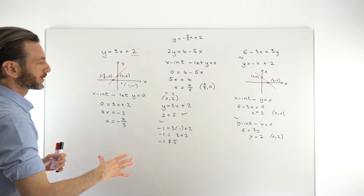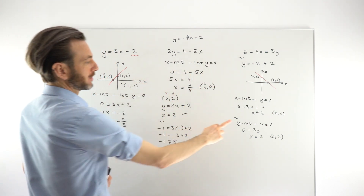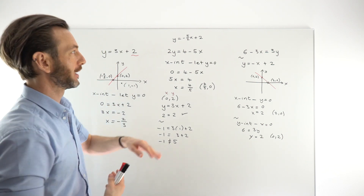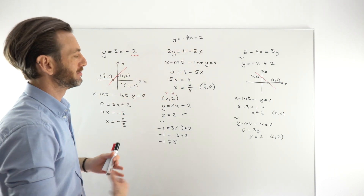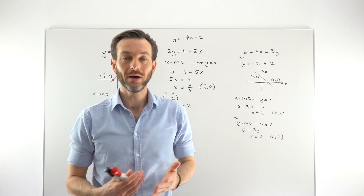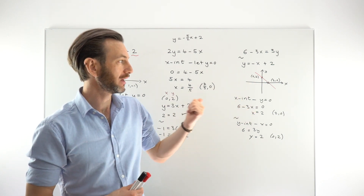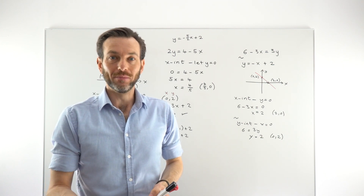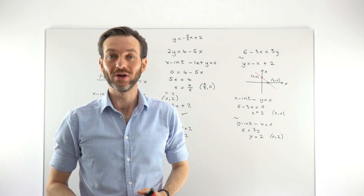Quick recap: to find the x-intercept, let y be 0; to find the y-intercept, let x be 0. Let the opposite coordinate be 0, then solve the resulting linear equation. You can additionally check by rearranging the original equation into the correct format y equals mx plus c, and sketching the graph to confirm that the geometry and the numbers for the x and y-intercept make sense. Having that geometric check is really useful in these part-algebraic, part-geometry topics — it can help you catch mistakes.